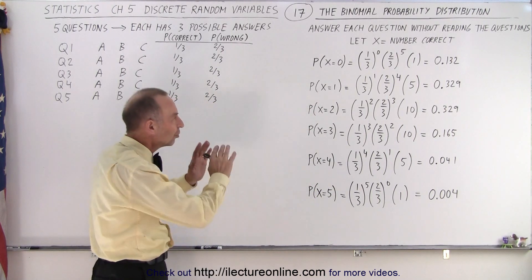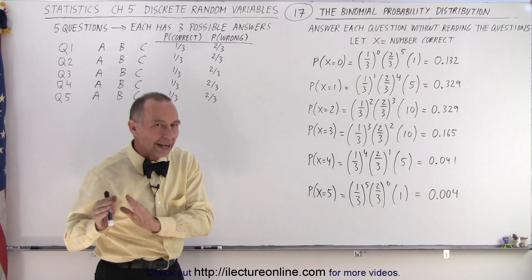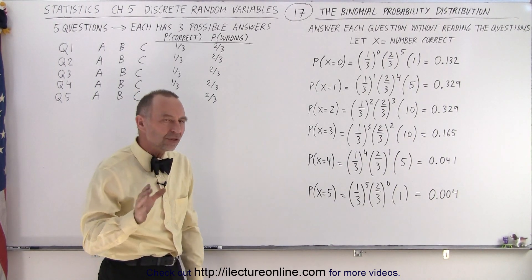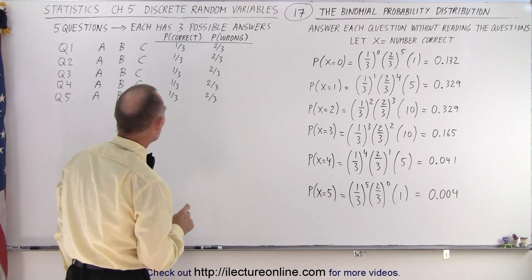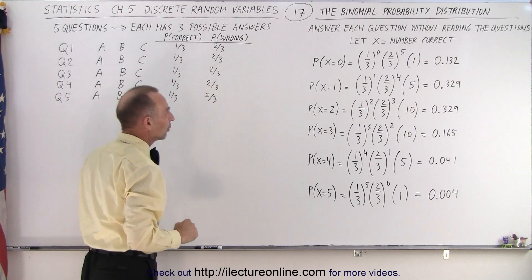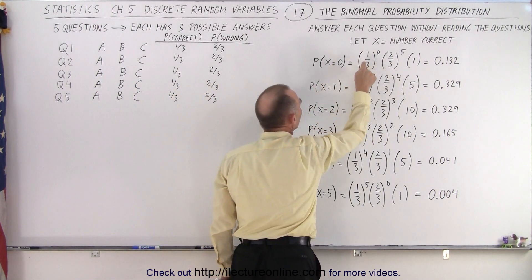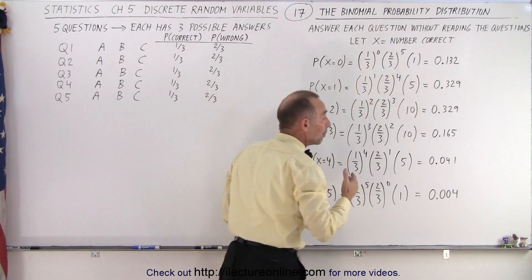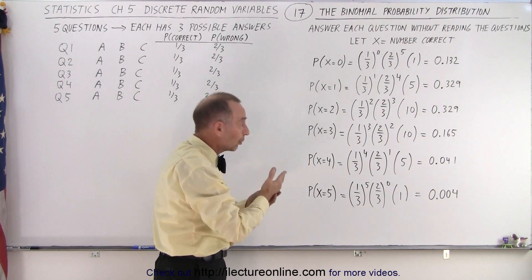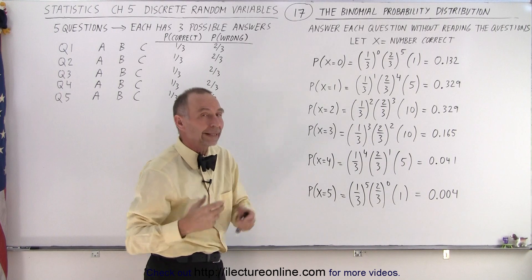Let's take a look at these calculations. I'm not yet showing you why they're correct, but if we take a look at them, they do seem to make sense. Notice that the probability of being correct in each case is one-third. Since we're looking for the probability that zero are correct, we have one-third raised to the zero power. Remember, if all five are correct, we would multiply one-third times itself five times, which gives us the correct answer.